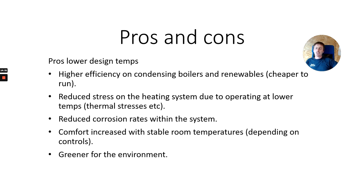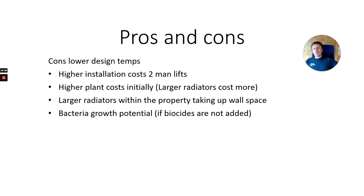Pros of a lower temperature system: higher efficiency on condensing boilers and renewables — cheaper to run; reduced thermal stress on the heating system; reduced corrosion rates; improved comfort with stable room temperatures depending on controls; and it's greener for the environment. Cons: higher installation costs; large radiators may need two-man lifts; higher plant costs initially; larger radiators take up wall space and require a good wall to hang them on; and there's a potential for bacteria growth within the system if water management is not controlled — biocides and VDI 2035 water treatment protocols need to be followed.